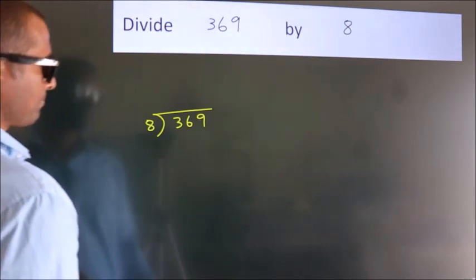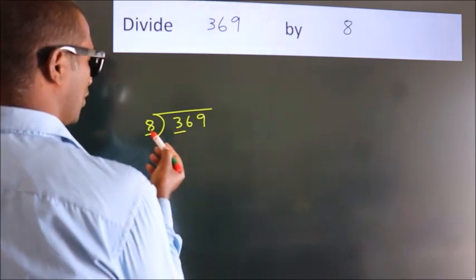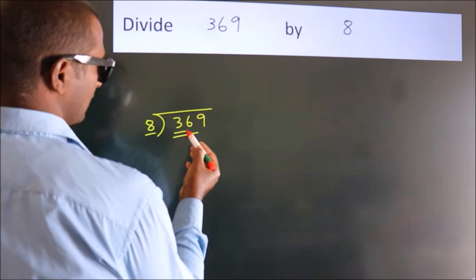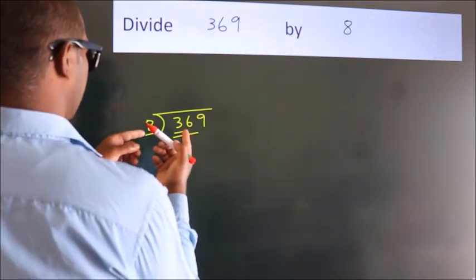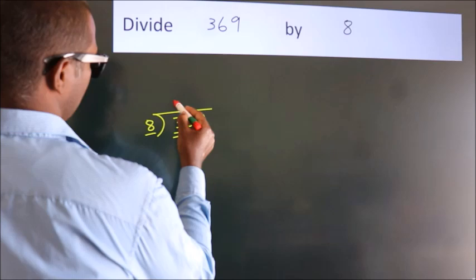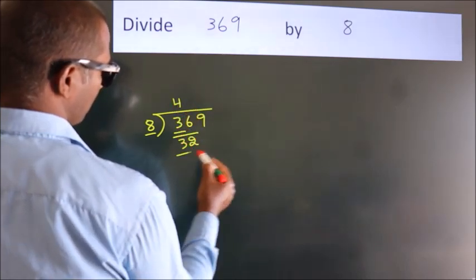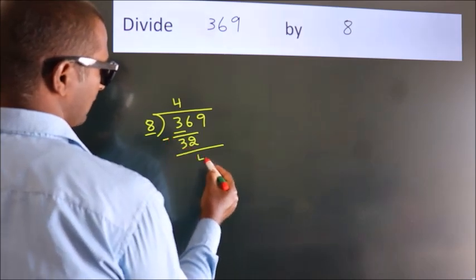Next, here we have 3. Here 8. 3 smaller than 8, so we should take 2 numbers: 36. A number close to 36 in the 8 table is 8 fours 32. Now we subtract. We get 4.